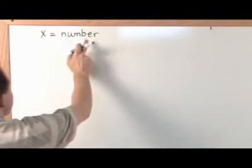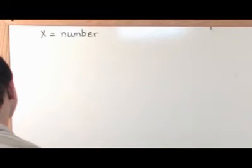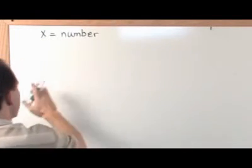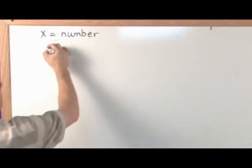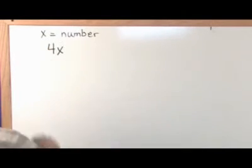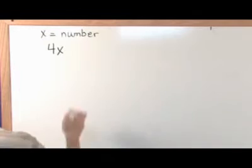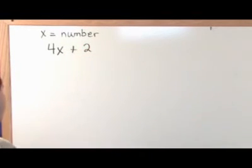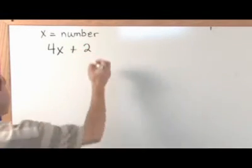So four times a number increased by two. Well, if my number is what I'm trying to solve for, then four times the number must be 4x, four times the number. Increased by two means I'm going to add two to it, has got to be equal to 30.